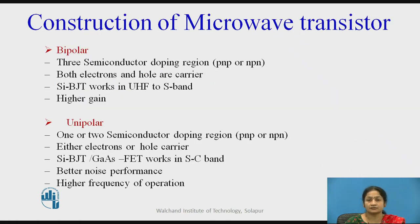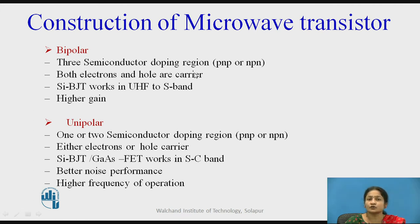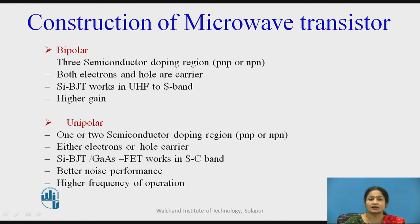Based on this construction of microwave integrated circuits, the first component we are discussing is the microwave transistor. There are two types of microwave transistors: unipolar and bipolar. Bipolar means there are two junctions, while in the unipolar there is a single semiconductor region used in construction. Comparing the two: in bipolar, there are three semiconductor doping regions — NPN or PNP — while in unipolar, one or two semiconductor doping regions of P-type or N-type material are used. In P-type material, majority carriers are holes, and in N-type material, majority carriers are electrons.